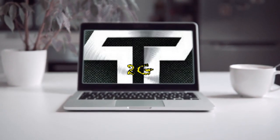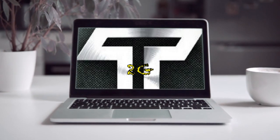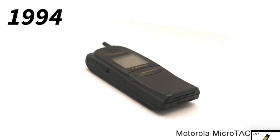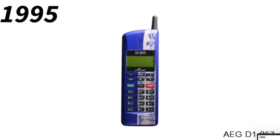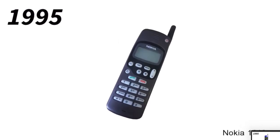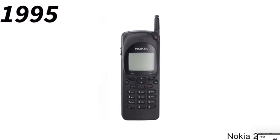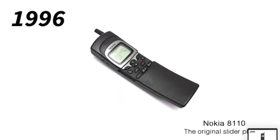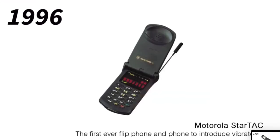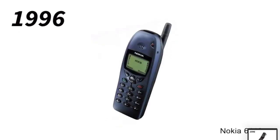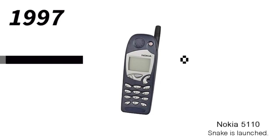Moving on to 2G technology, which refers to the second generation, it was actually based on GSM, which was launched in Finland in 1991. 2G was the biggest advancement compared to 1G. In 1G we had 2.4 kbps, but in 2G the data speed was up to 64 kbps — a marvelous turning point for mobile. Features included services such as text messages, picture messages, and multimedia messages.